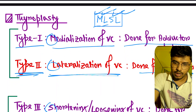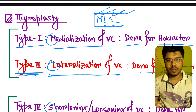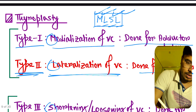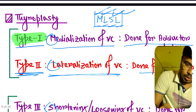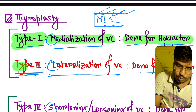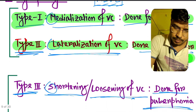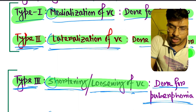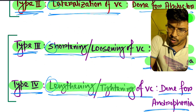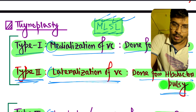To quickly revise: Type 1 thyroplasty — medialization of the vocal cord, done for adductor palsy. Type 2 thyroplasty — lateralization of the vocal cord, done for abductor palsy. Type 3 thyroplasty — shortening or loosening of the vocal cord, done for puberphonia. Type 4 thyroplasty — lengthening or tightening of the vocal cord, done for androphonia. Remember the mnemonic: MLSL.